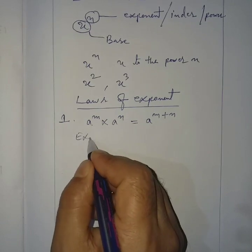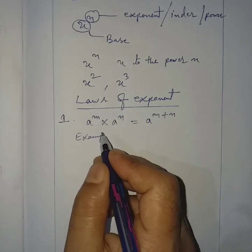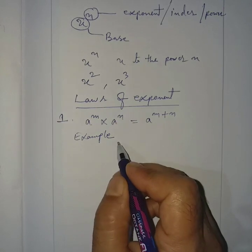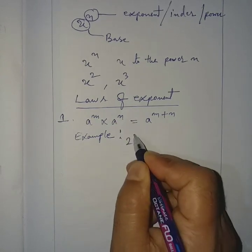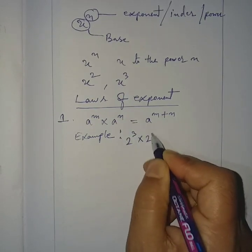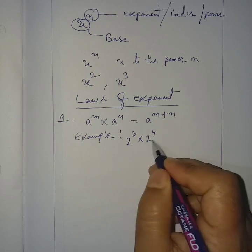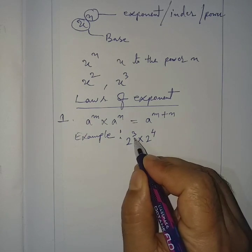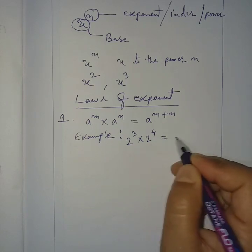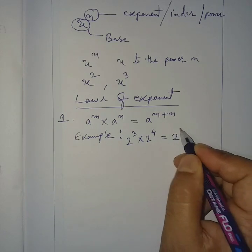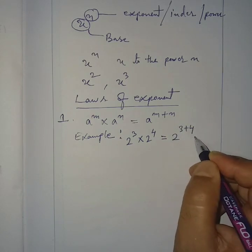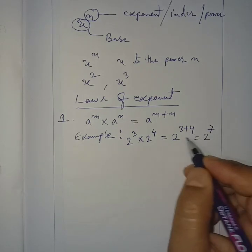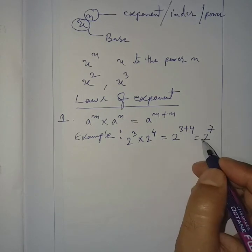Example: 2 to the power 3 into 2 to the power 4. Here the base is 2 and the powers are 3 and 4. So it is written as 2 to the power (3+4), which equals 2 to the power 7.